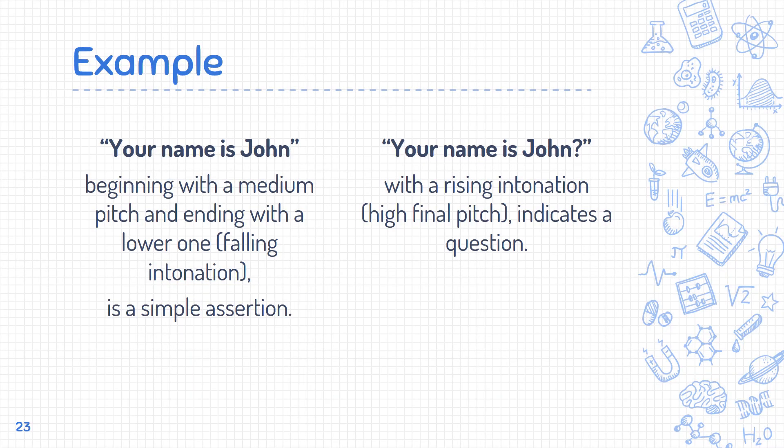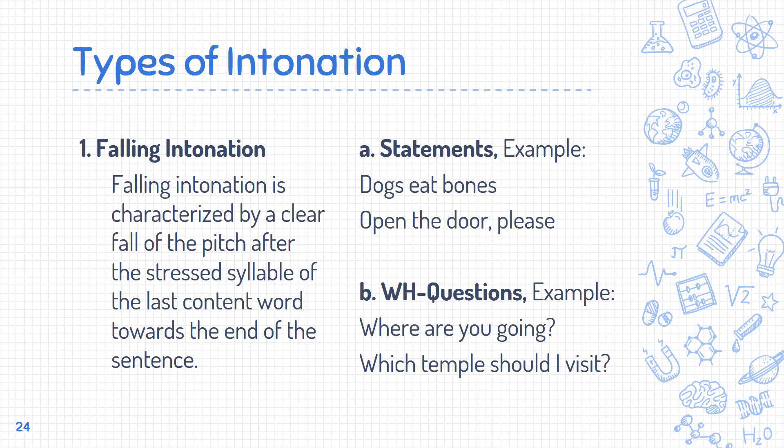For example: the sentence 'Your name is John' ending with falling intonation is a simple assertion, while 'Your name is John?' ending with rising intonation indicates a question. Types of intonation: first, falling intonation is used in statements — 'Talks,' 'Eat,' 'Open the door please' — and in wh-questions — 'How are you going?' 'Which temple should I visit?'